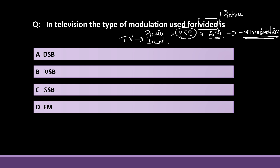This is frequency modulation. Here are the options: Option A is DSB — Double Sideband Modulation. Next is VSB — Vestigial Sideband. And SSB is Single Sideband. FM is Frequency Modulation.